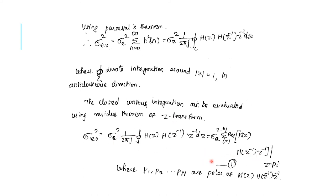This closed contour integral can be evaluated using the residue theorem of the z-transform, where P1, P2 up to Pn are the poles of the transfer function H(z) H(z⁻¹) z⁻¹.